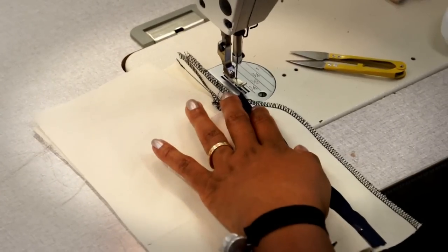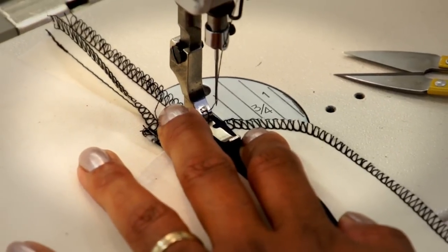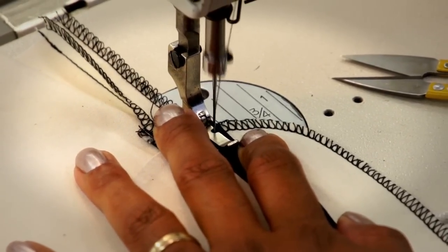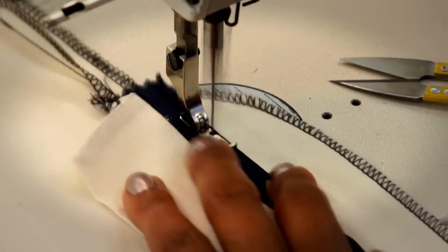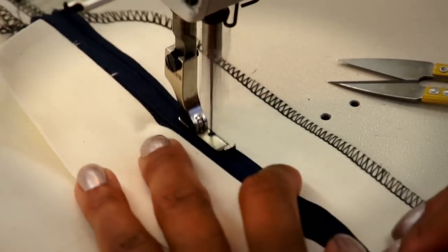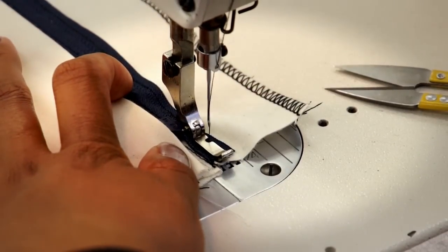This is a stay stitch. So I'm going to be sewing through the zipper tape and the facing, attaching them. I'm going to go all the way to the top. Make sure you backstitch.